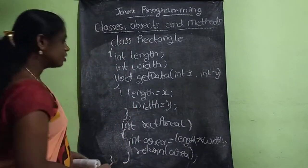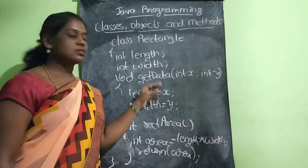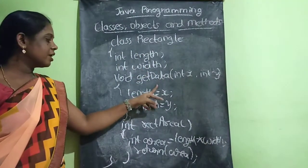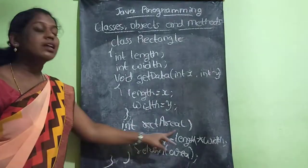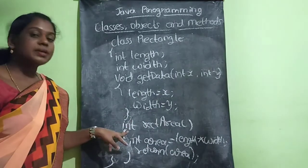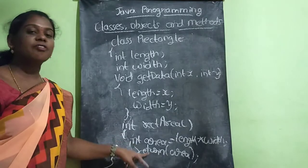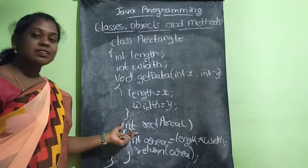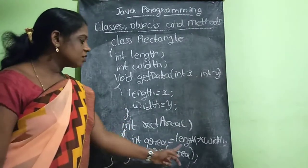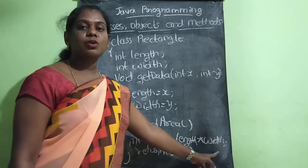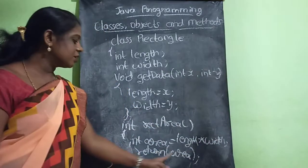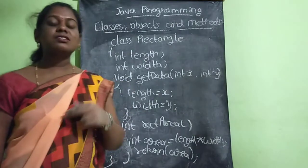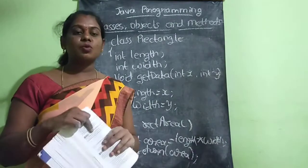So in this class you have declared two methods. The fields are length and width. get data is one method, and rect area is another method with return type int, meaning it returns a value. Within rect area: int area equals length into width - that calculates the area - and then return area.